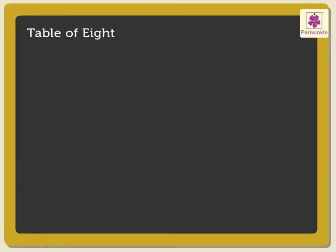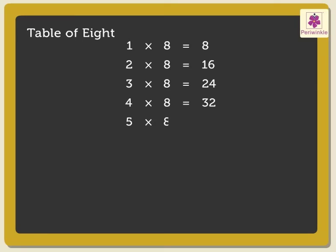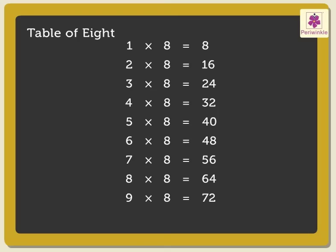Now let us revise the table of 8. 1 eight is 8. 2 eights are 16. 3 eights are 24. 4 eights are 32. 5 eights are 40. 6 eights are 48. 7 eights are 56. 8 eights are 64. 9 eights are 72. 10 eights are 80.